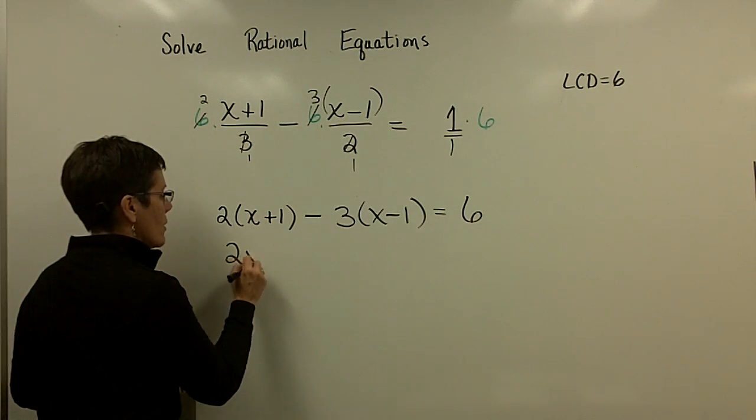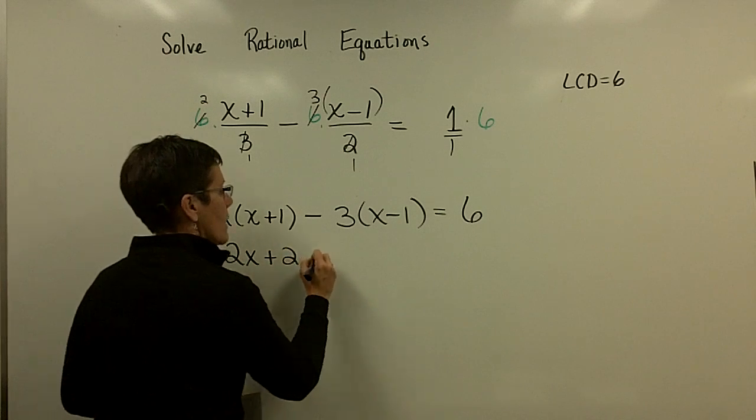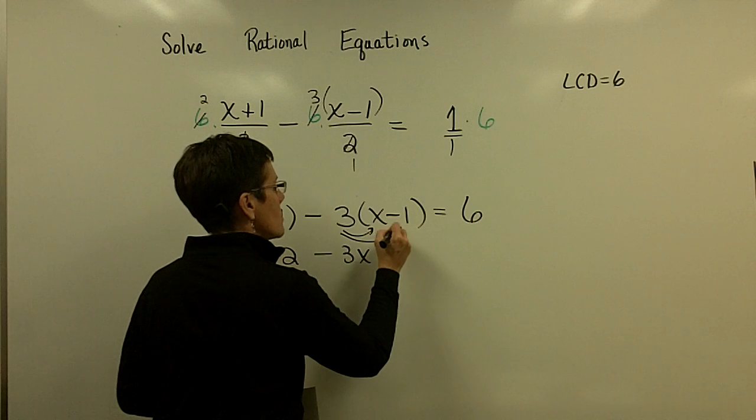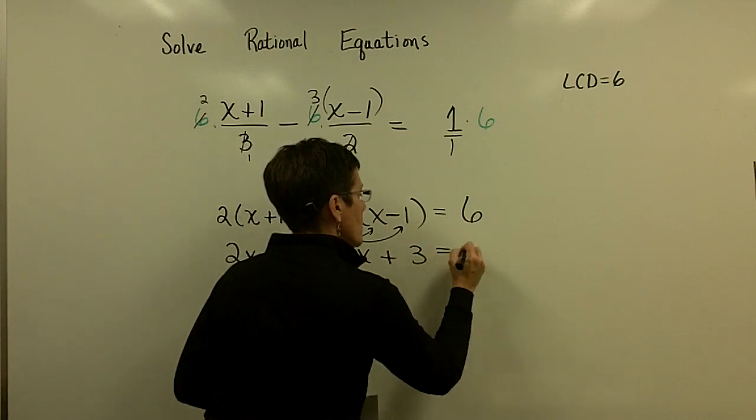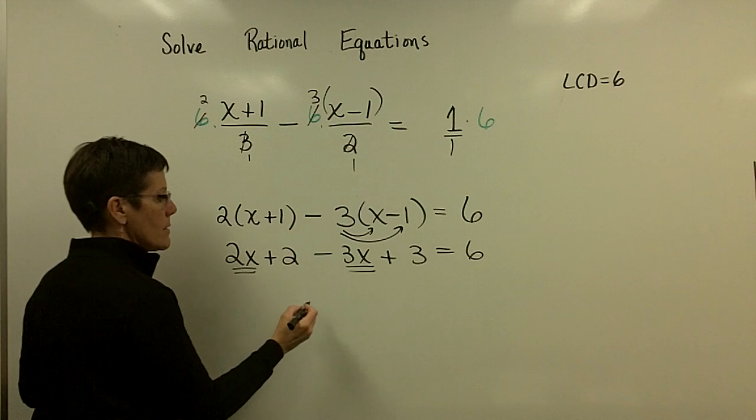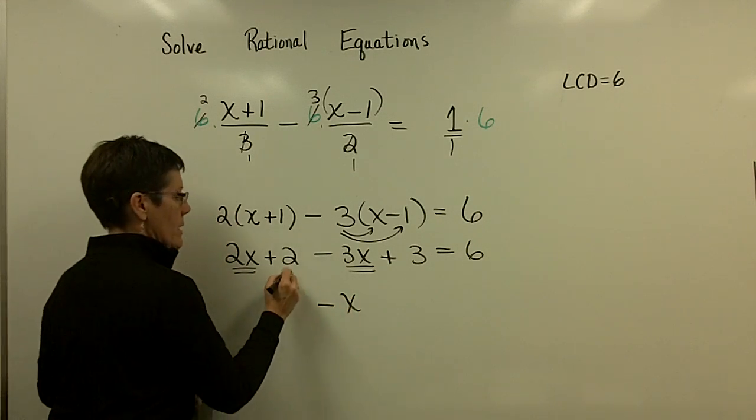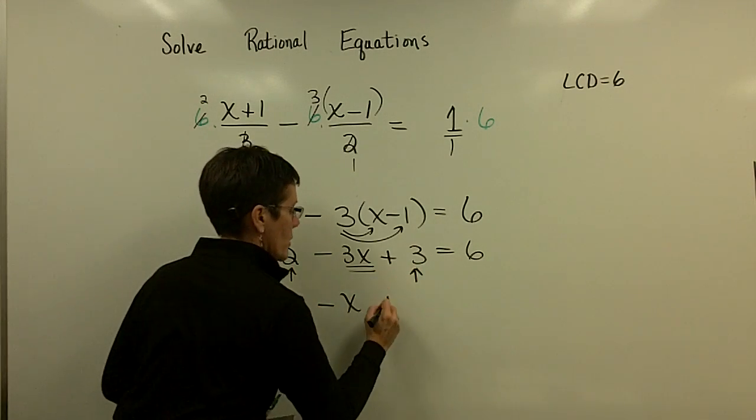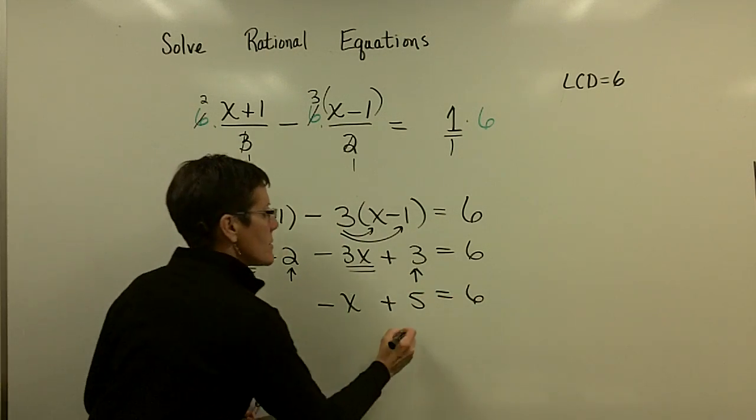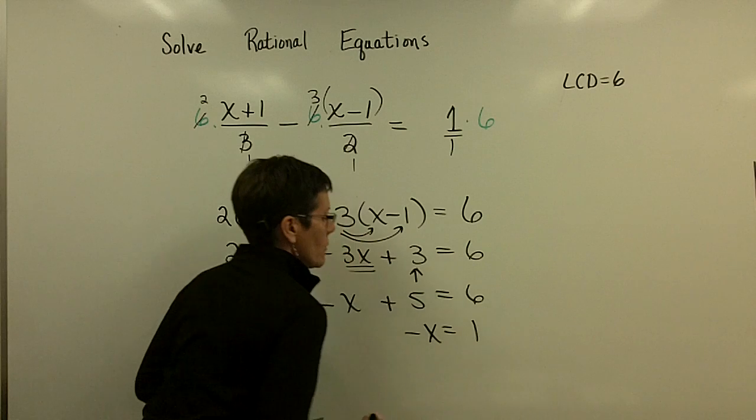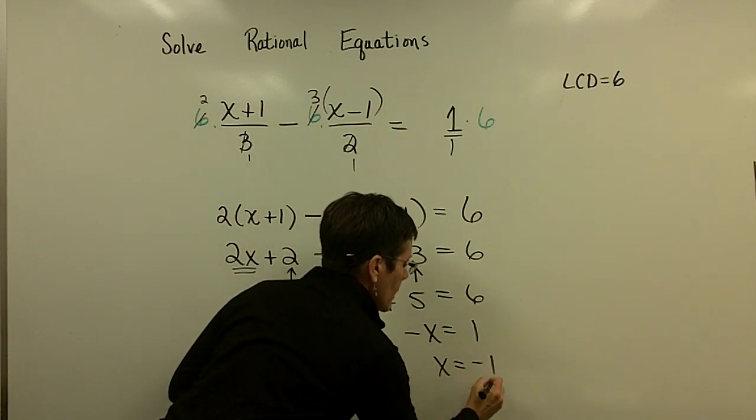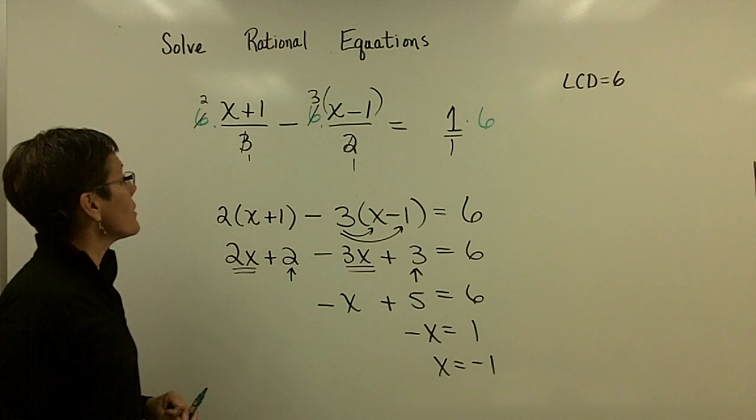And so, finally, now you're just solving this linear equation. So, distribute the minus 3. And then collect your like terms. So, 2x minus 3x is a minus 1x. And 2 and 3 add to be 5. Subtract 5 from both sides. And so, you'll get 1 over here. Divide both sides by a negative 1. And you get a solution for x.